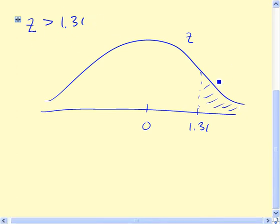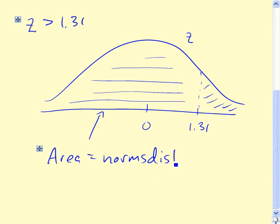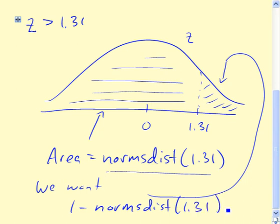Well, the thing is that NORMSDIST can only tell us areas to the left of values, right? So we can use NORMSDIST to tell us this area here. So that area equals NORMSDIST of 1.31. Well, that's actually almost enough, because the other fact we can exploit is that the total area below the curve, this is a density curve, so the total area below this curve has to equal 1. So the area we want, that part there is just 1 minus whatever this number is right here. So our area then, 1 minus NORMSDIST of 1.31.